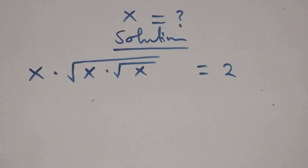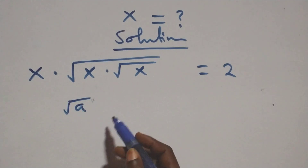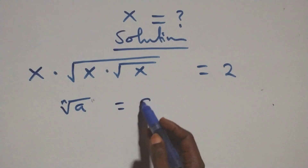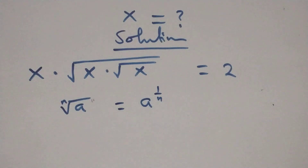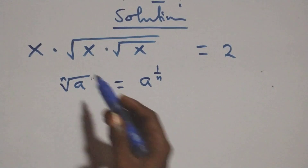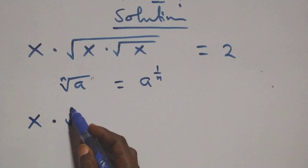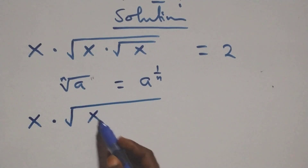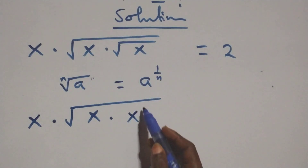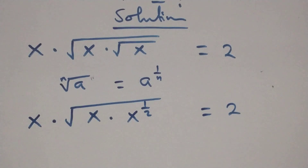We should note that whenever we have the nth root of a, this is the same thing as a raised to power 1 over n. So what we have becomes x times x raised to power 1 over 2 equals to 2.